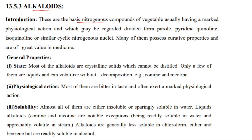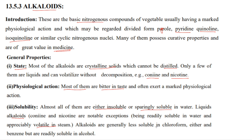Let's talk about alkaloids. These are basic nitrogenous compounds of vegetable origin, usually having a marked physiological action, and which may be regarded as derived from pyrrole, pyridine, quinoline, isoquinoline, or similar cyclic nitrogenous molecules. Many of them possess curative properties and are of great value in medicine. Most alkaloids are crystalline solids which cannot be distilled; only a few are liquid and volatile without decomposition — for example, coniine and nicotine. Most are bitter in taste and exert marked physiological actions.